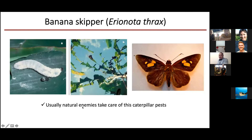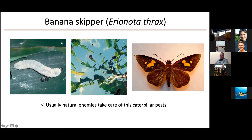Another insect — not so economically important — is the banana skipper, also called banana leaf roller. The adult banana skipper lays single white eggs on banana leaves, and the larvae hatch into caterpillars that roll the leaf, stay inside feeding on the leaf tissue, and produce excreta. They are usually taken care of by natural enemies here in Hawaii, so we don't normally do anything even when we see leaf-rolling symptoms on our banana farm.